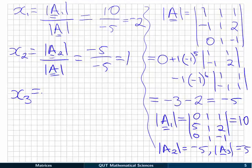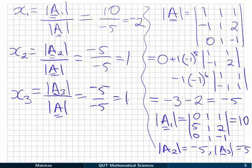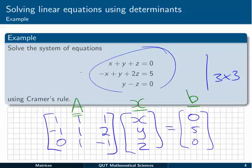And finally, x3 is going to be the determinant of A3 over the determinant of A. Again, minus 5 on minus 5, and that's going to be 1 as well. So we have our solution for the original set of equations, these three equations here.